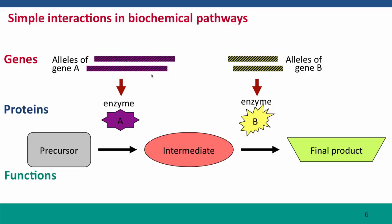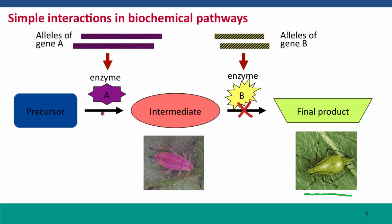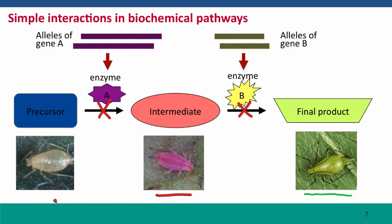On a more realistic level, consider a pathway where the final product is a green pigment present in aphids. The green pigment makes the aphids the same color as the leaf, making them difficult for predators to see. A mutation blocking the second step of the pathway causes the intermediate to accumulate and pile up, making aphids pink. If gene A is knocked out, only the precursor is present and the aphids are colorless — white.